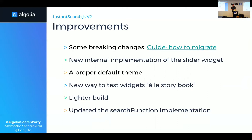We have a new internal implementation of the slider widget, which was holding us back. We have a new default theme so you have a great experience from the first millisecond. We have a new way to test widgets à la Storybook — it's an awesome tool and we have something similar. We've also updated the search function, which was a pain. And we made the build smaller by only using Preact. I've only cited the more meaningful fixes and roadblock removals, but we also added a lot of other fixes.